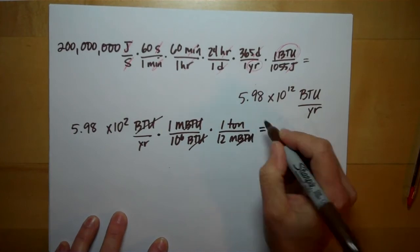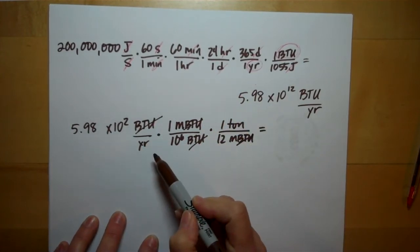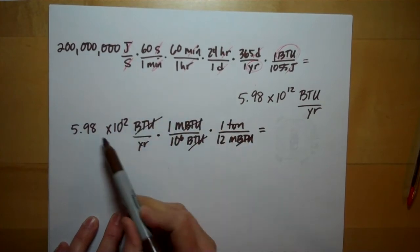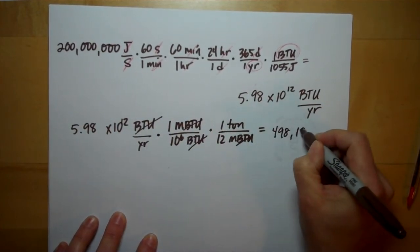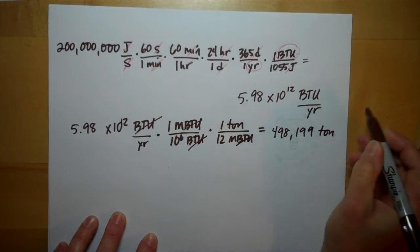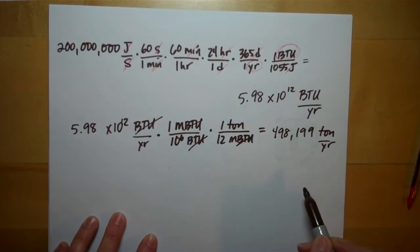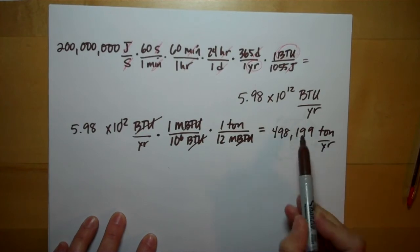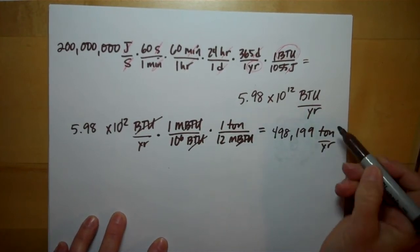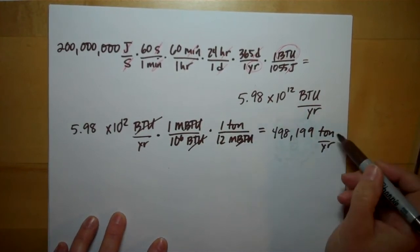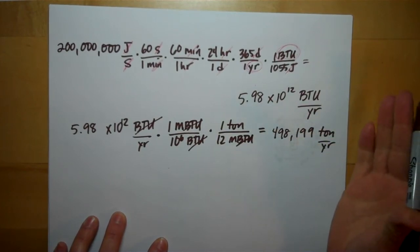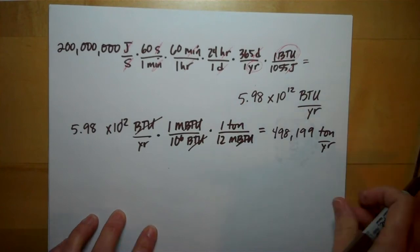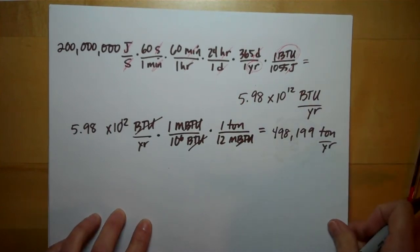And this comes out to, if you do this math, 498,199 tons per year. And now we're left with our efficiency. We don't actually produce this much, because remember, this is an incredibly inefficient process. So you have to take into account the efficiency.